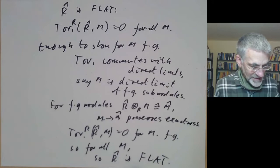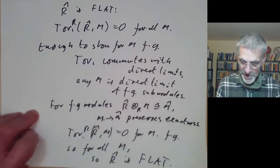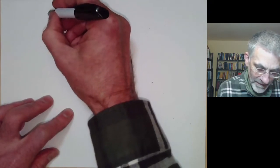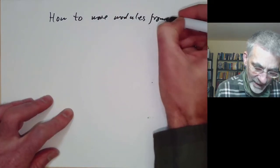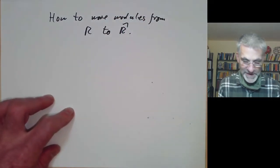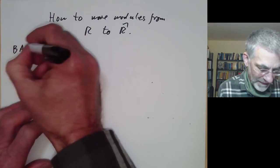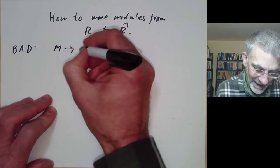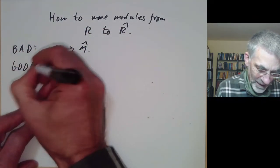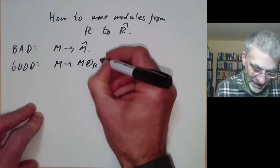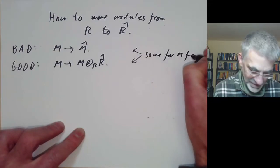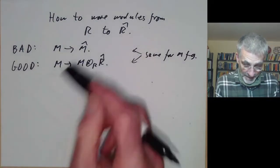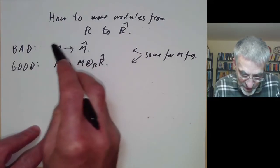This shows that over a Noetherian ring, any completion is a flat module. How do we use this? We often want to move modules from a ring R to its completion. There are two ways: a bad way — taking M to M̂ — and a good way — taking M to M ⊗_R R̂. These are the same for M finitely generated, but in general the completion gives the wrong answer.